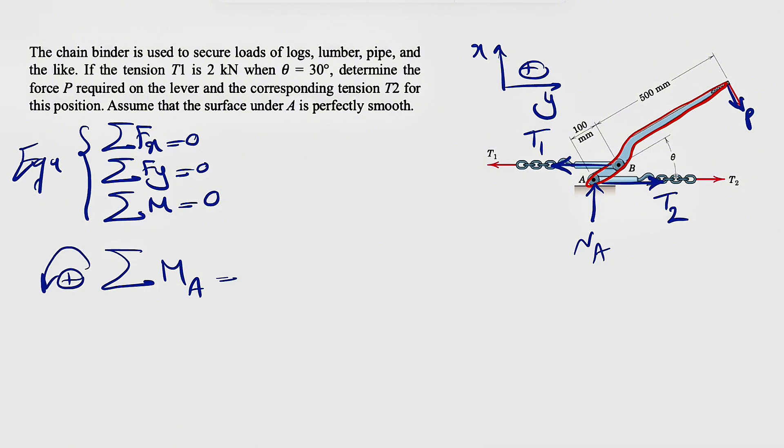counterclockwise as positive, as always, we're going to eliminate the moment of NA and T2. We already have T1, so we should be able to find P pretty easily. We know theta is 30 degrees in here, so we're going to have the moment of T1 about point A, which is counterclockwise, so positive.